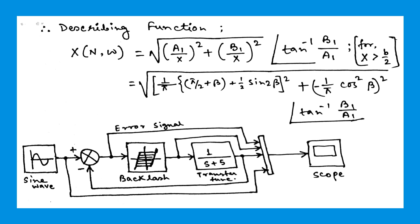If the value is greater than B/2, then we can write the describing function magnitude as square root of (A1/X)² plus (B1/X)², and the angle ω equals tan inverse of B1/A1. So if we put the values, the magnitude will be 1/π times the square root of [(π/2 plus β plus 1/2 sin(2β))² plus (cos²(β))²], and the angle is tan inverse of B1/A1.